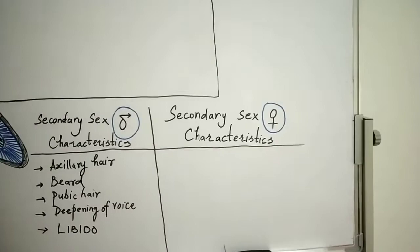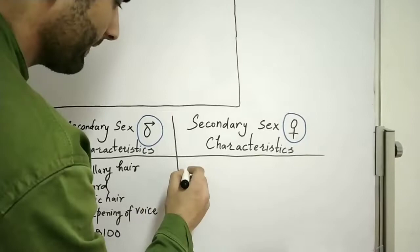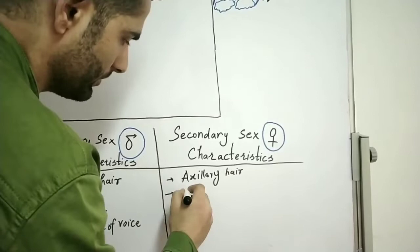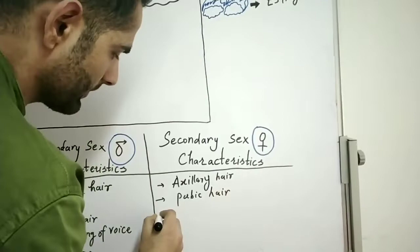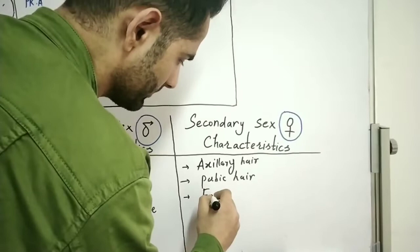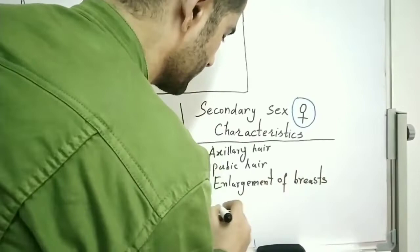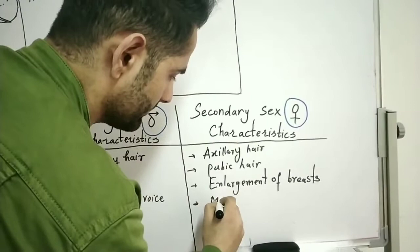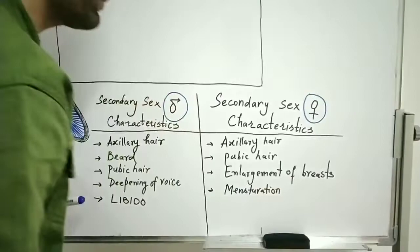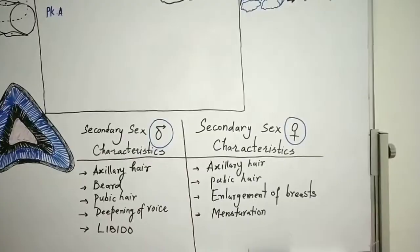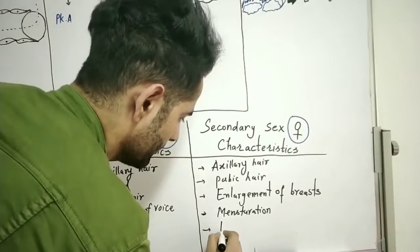In males there is also an increase in libido — that is, sexual desire. In females, the effects of sex corticoids include axillary hair growth, pubic hair, enlargement of breasts, start of menstruation, and also increased libido — increased sexual desire.